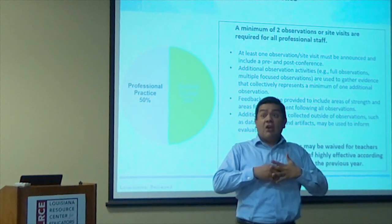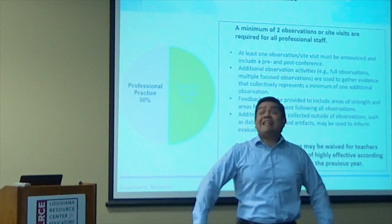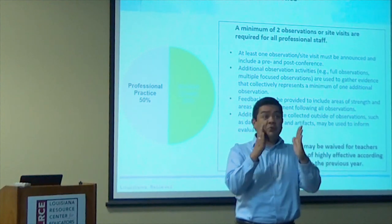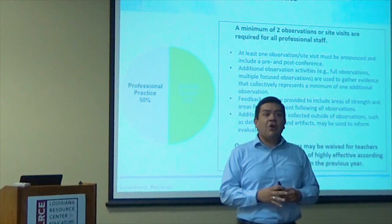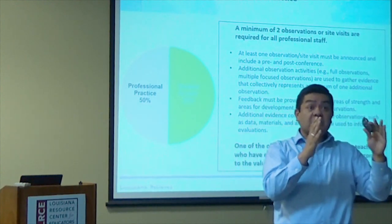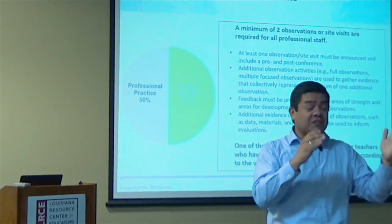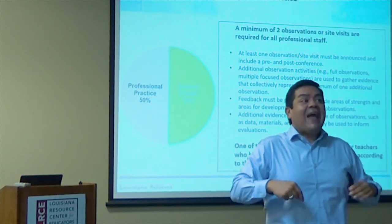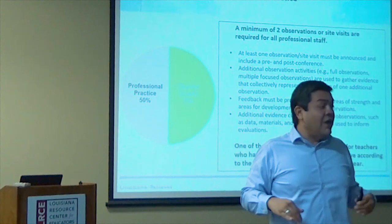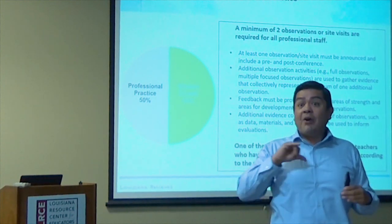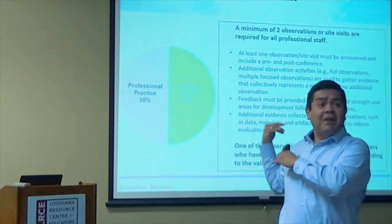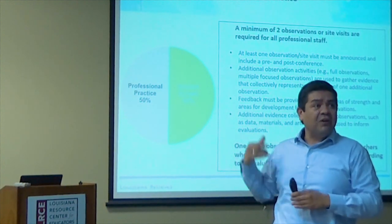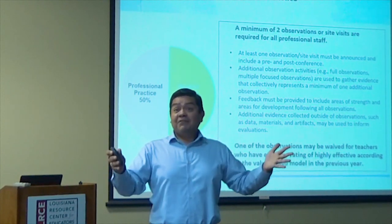The bulletin says you have the autonomy to do that, but many districts follow the traditional one in the fall and one in the spring model. Even if we have to fall into what our districts require, what's within our circle of control is making it a priority to go in and do several walkthroughs as often as we can. All that additional information supports the formal observations you're required to do.